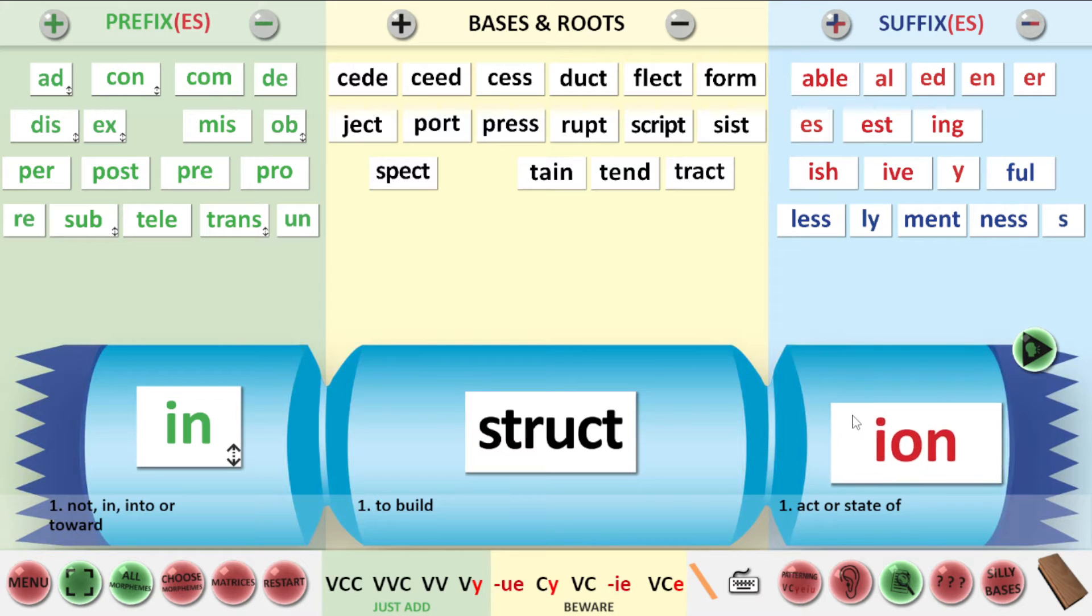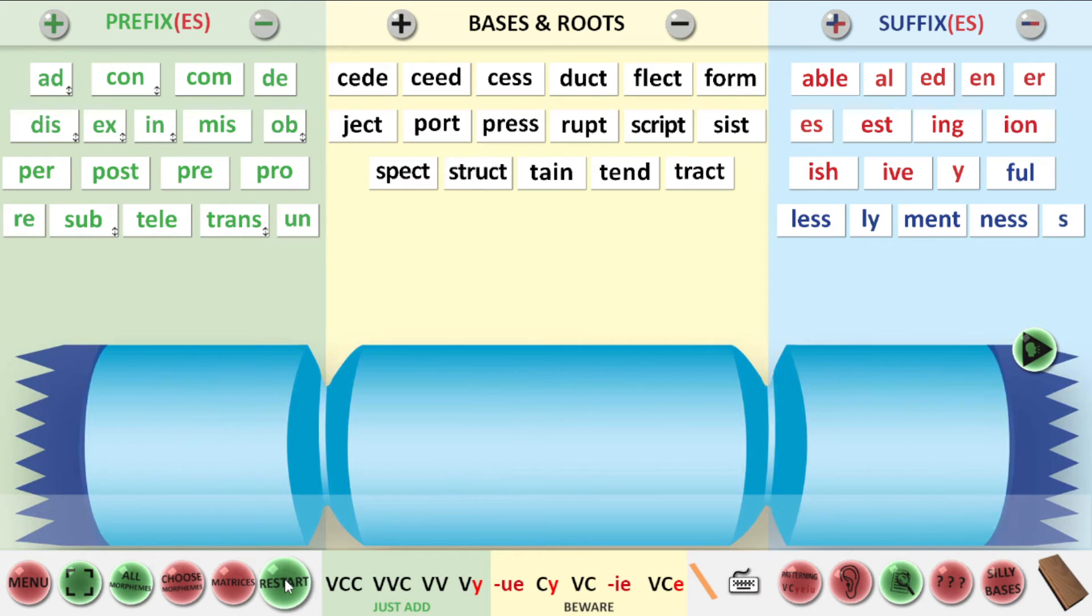And if you have grabbed suffix I-O-N, you've got it. So now we have something that helps us in building, and it's the act or state of. And now let's make it plural. Let's make it more than one. All right. So if you've grabbed suffix S, or if you've written suffix S, you should have instructions. So more than one thing that helps us in the act or state of building something. If you haven't written that on your whiteboard, can you please write instructions on your whiteboard and show it for your teacher. Okay, well done. So that was a bit tricky, but let's push on.